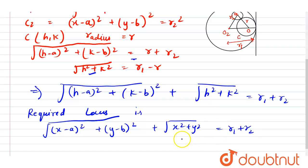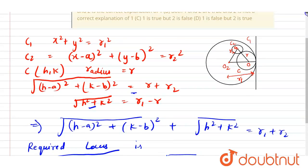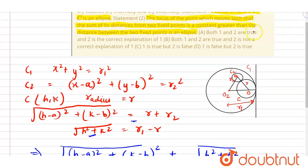As we can see that it represents an ellipse whose foci is a comma b and 0 comma 0. So we can say that both the statements are true and 2 is the correct explanation of 1.